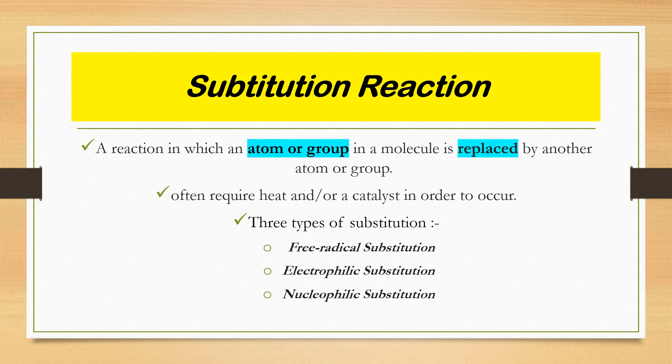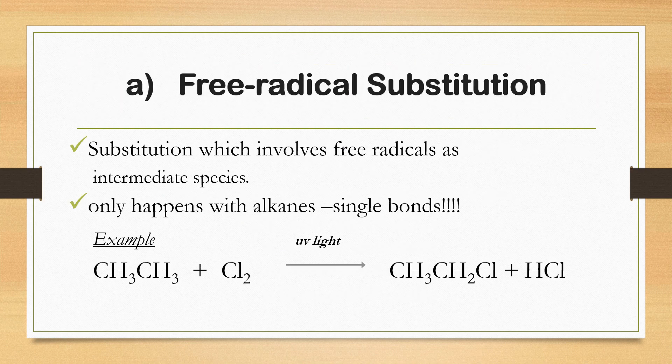In substitution reactions, atoms or groups of atoms in a molecule are replaced by another atom or group. There are three types: free radical, electrophilic, and nucleophilic substitution. For free radical substitution, it involves free radical intermediates and only occurs with alkanes with single bonds. A key characteristic to identify free radical substitution is the presence of UV light in the chemical equation, as it requires high energy or heat to occur.